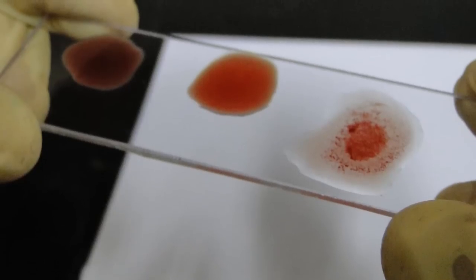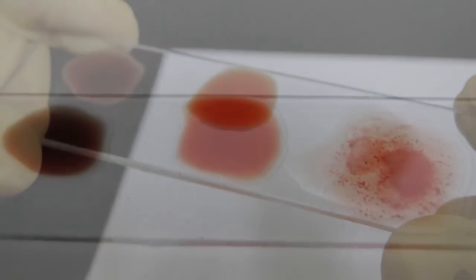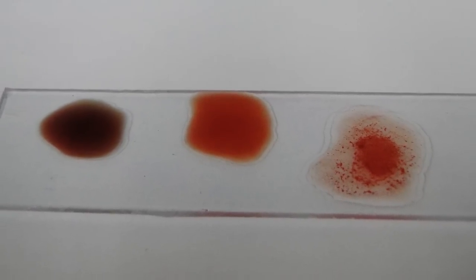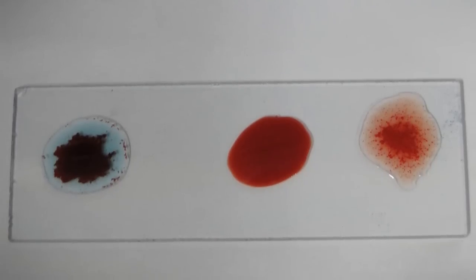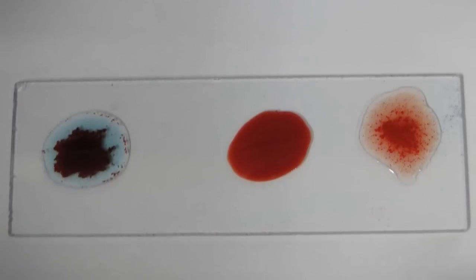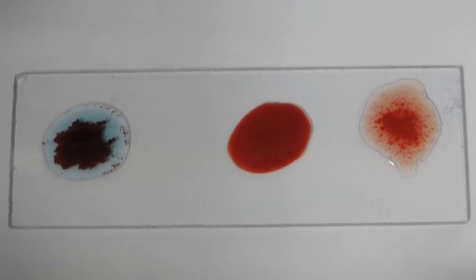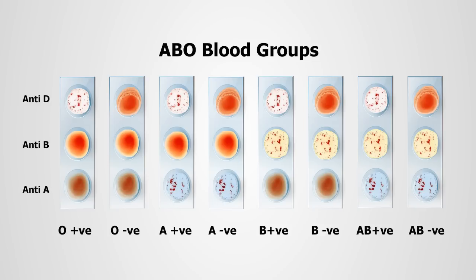When RBCs carrying one or both antigens are exposed to the corresponding antibodies, they agglutinate — i.e., they clump together. For example, in this slide, agglutination occurs on the first and the third drops, which corresponds to antigen A and RH factor. So the blood group is A positive. Thus, we can identify the blood group by noticing the agglutination on the corresponding drops.